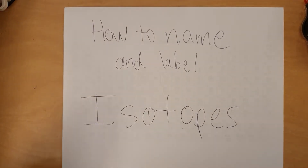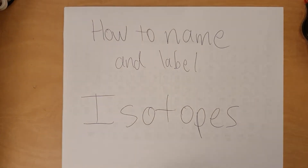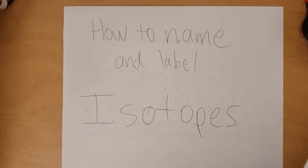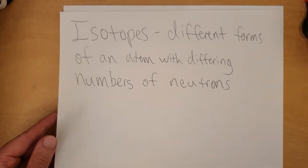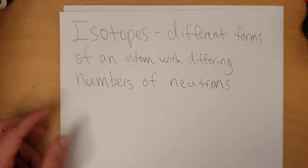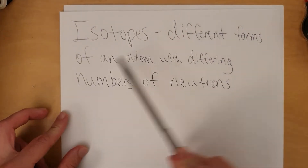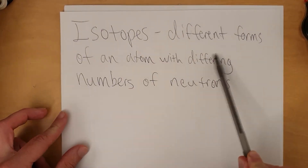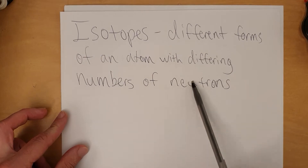Let's talk about how to name and label isotopes. In order to do that, we first need to define what an isotope is. Isotopes are different forms of an atom with differing numbers of neutrons.